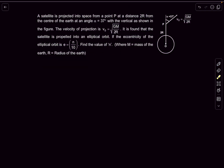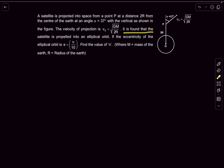Now let's move on to the next question — a problem from gravitation involving geometrical properties of an ellipse. We have a satellite projected into space from a point P at a distance of 2R from the center of the Earth at an angle α. The velocity of projection is √(GM/(2R)), and it is found that the satellite is propelled into an elliptical orbit. We have to find the eccentricity.